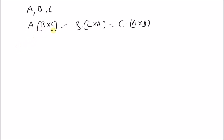So now we want to prove that A dot B cross C — that is the dot product of A with the cross product of B and C — is equal to the dot product of B with the cross product of C and A.